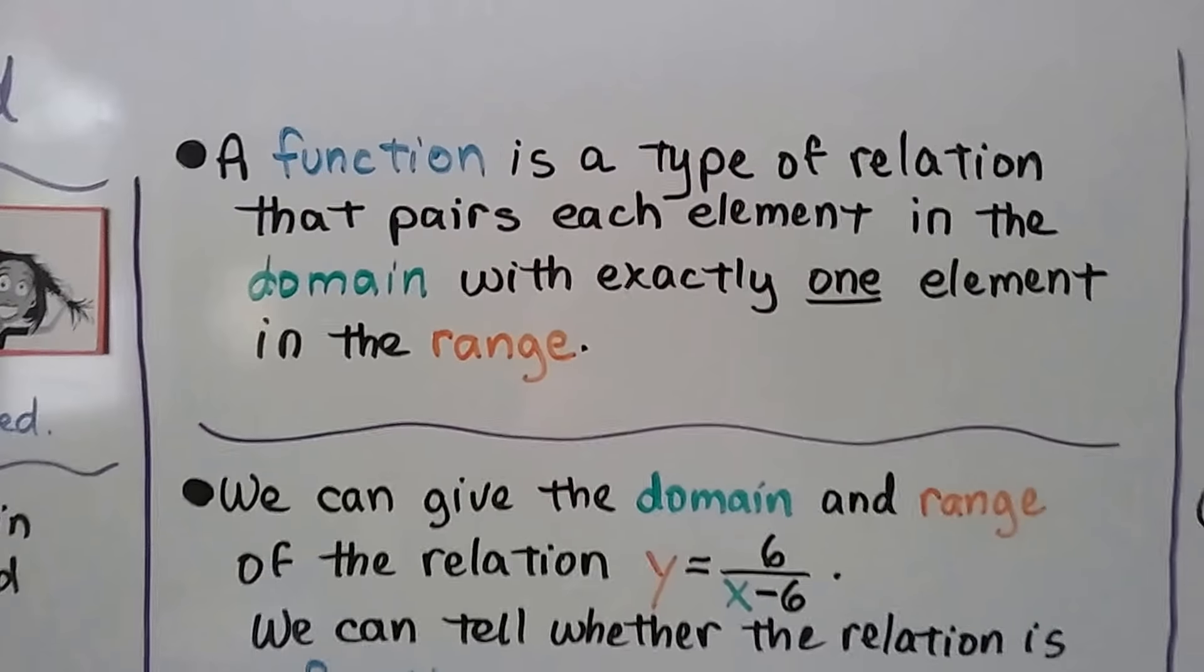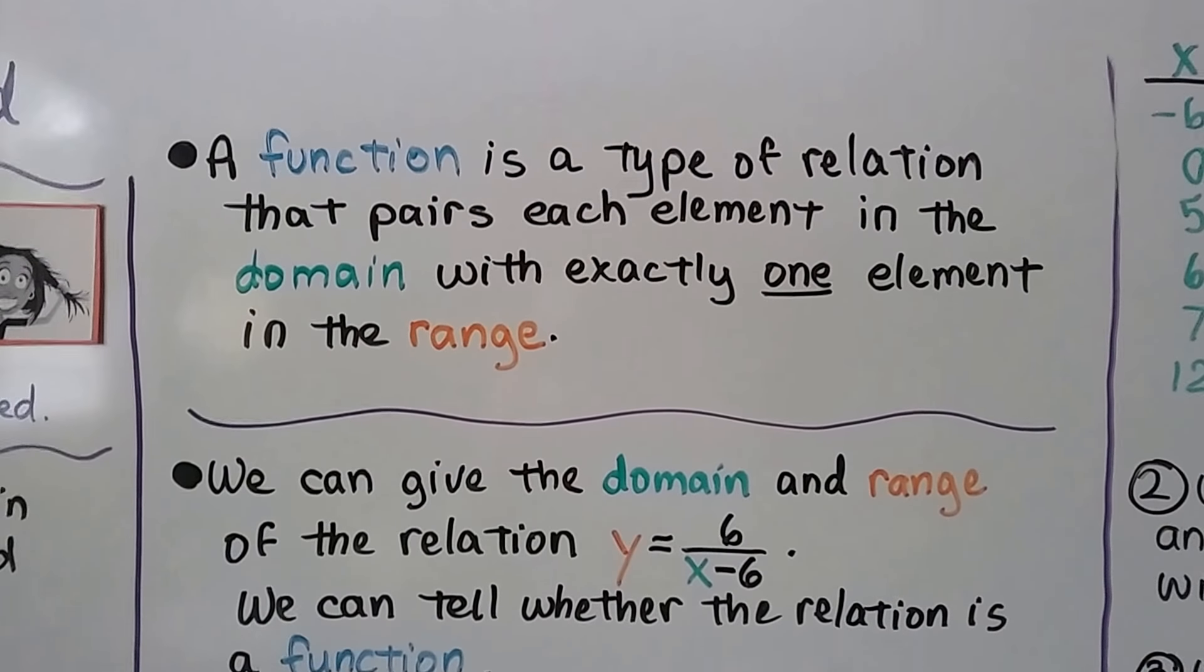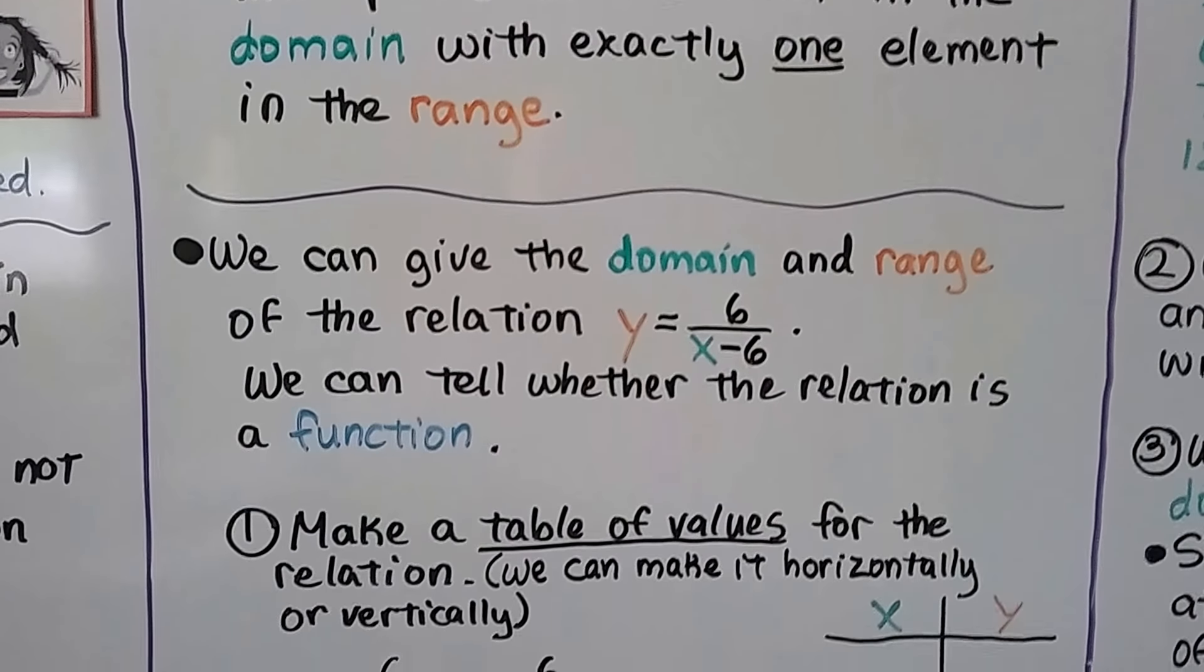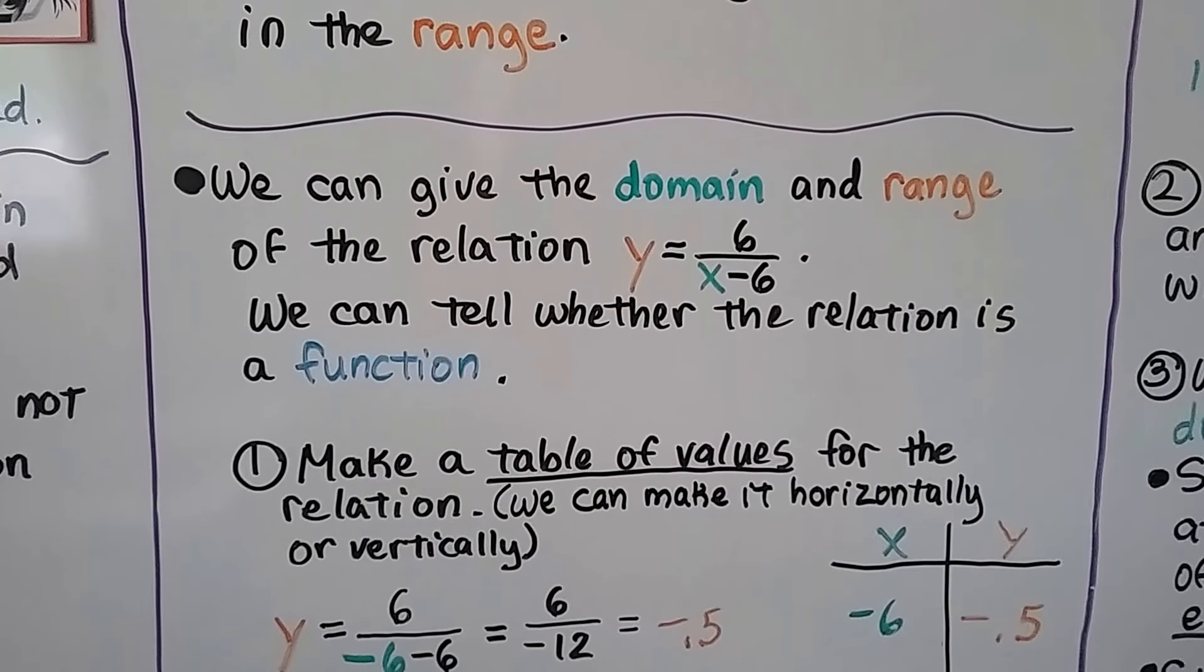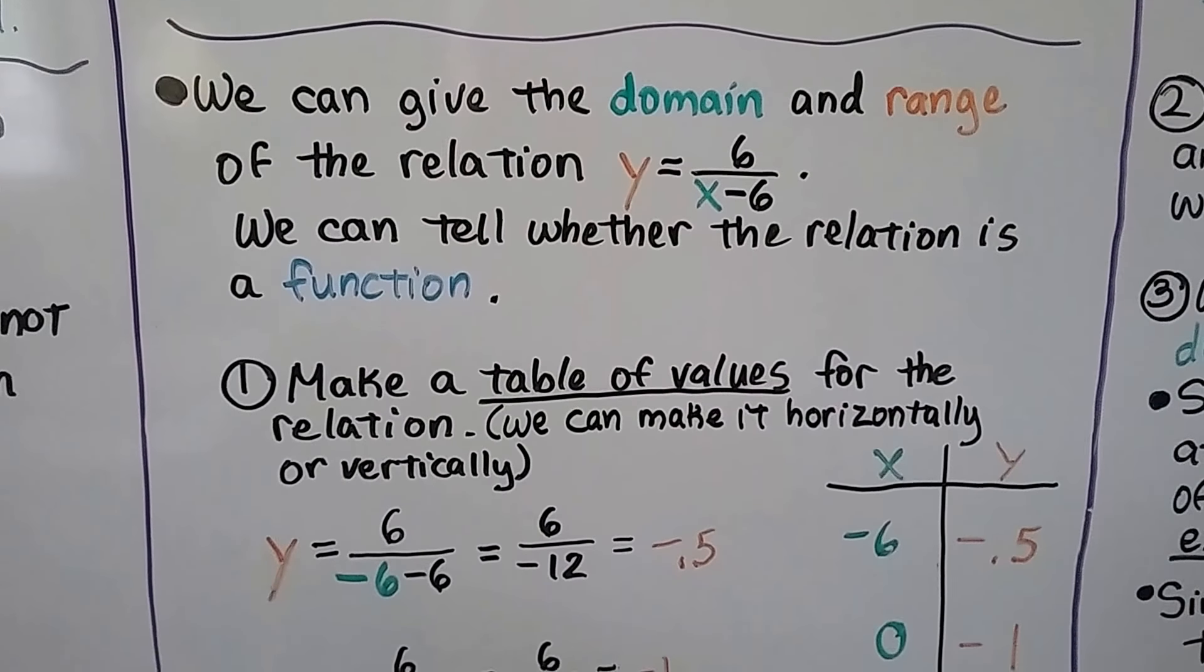And a function is a type of relation that pairs each element in the domain with exactly one element in the range. And we can give the domain and range of the relation for y equals the quotient of 6 and x minus 6, and we can tell whether the relation is a function.